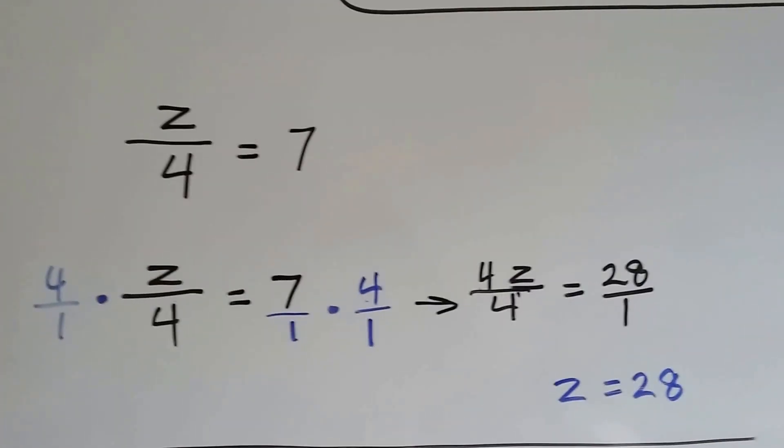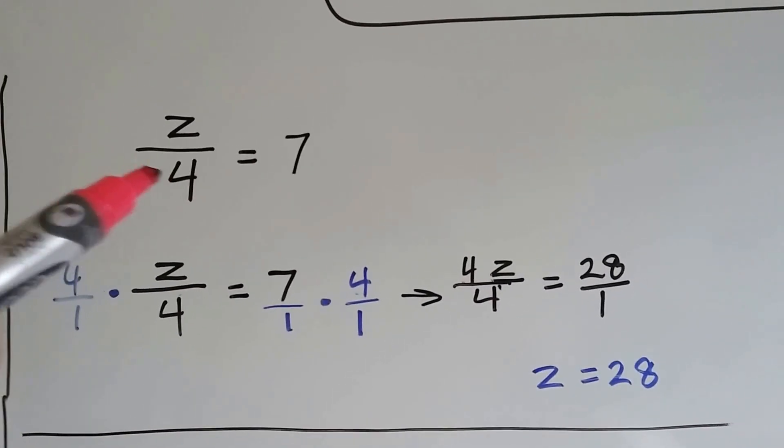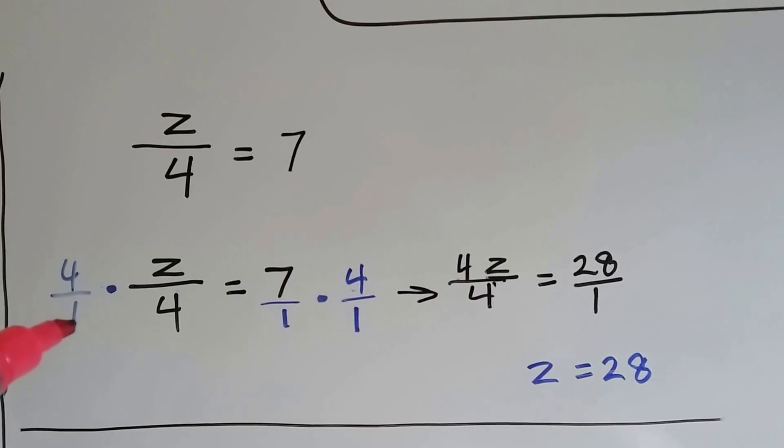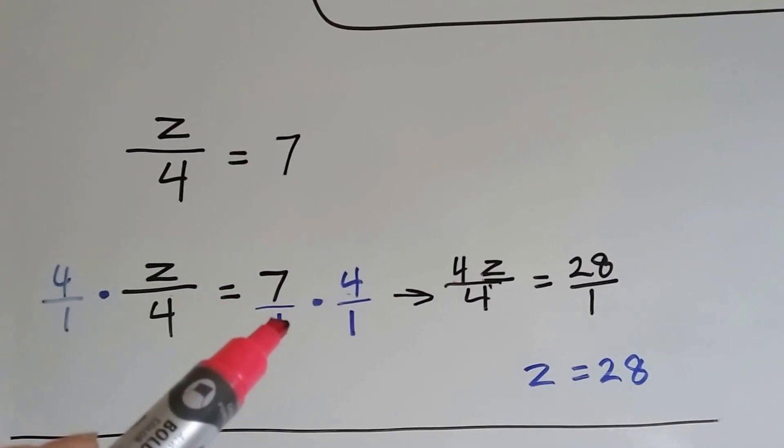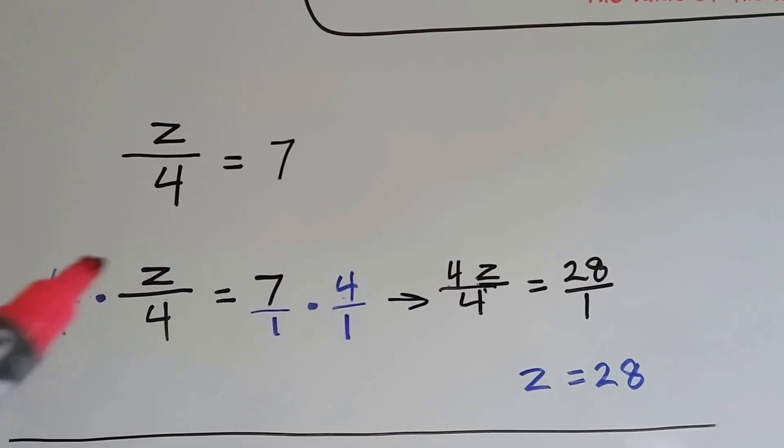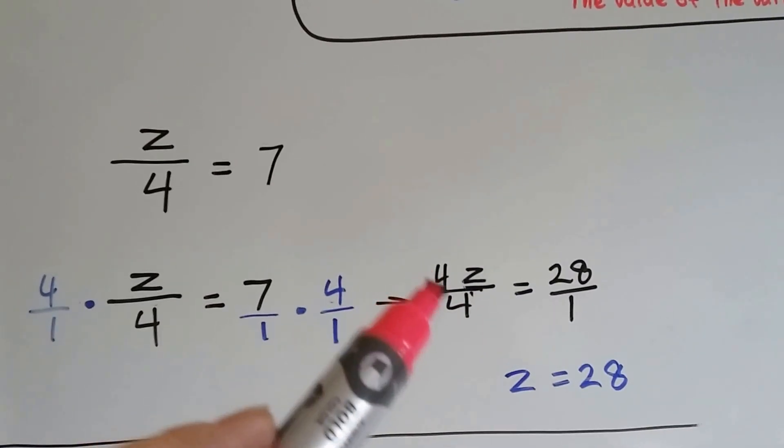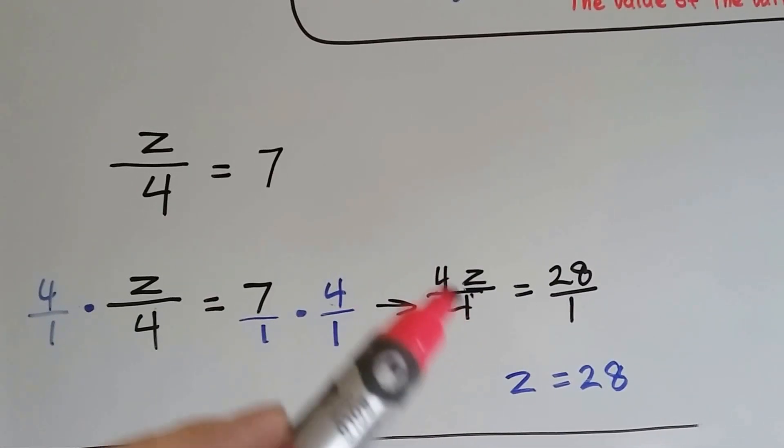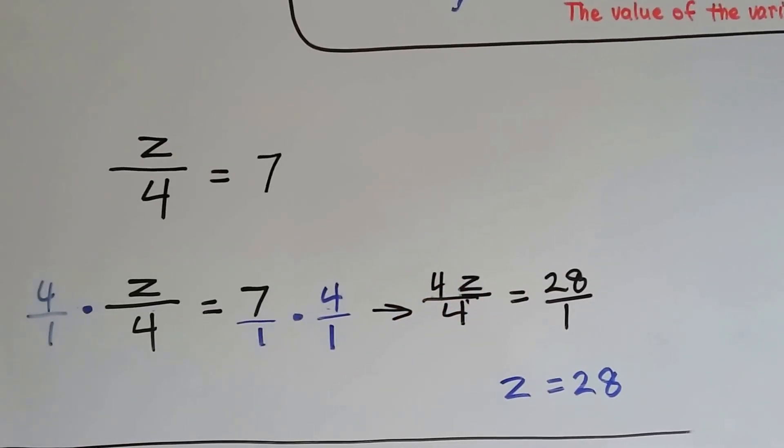We've got z over 4 equals 7. We multiply both sides by the 4, by the denominator. We're going to do 4 over 1 multiplied on this side, and 4 over 1 multiplied on this side, and the 7 is going to go over 1 to turn it into a fraction also. We end up with 4z over 4 equals 28 over 1. This 4 cancels out that 4, because 4 fourths is 1, and we have z equals 28.